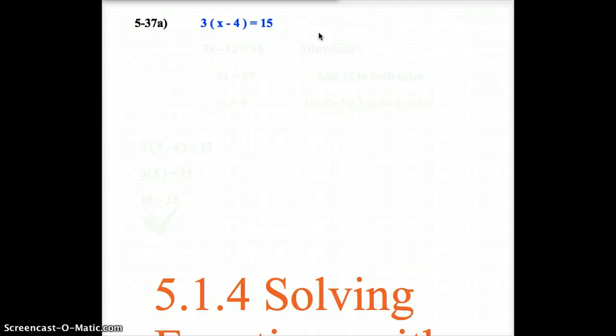first step for solving this would be to distribute the 3. When we distribute the 3, we get 3x minus 12. 3 times x is 3x, 3 times negative 4 is minus 12.